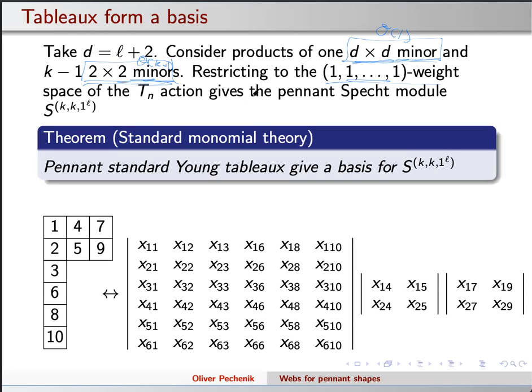And so this is some space of polynomials again. The definition is a little bit complicated, but it is completely explicit. And these polynomials are the Specht module. They're the Specht module for this pennant shape. And you know, you can write them down. And the action of the symmetric group is permuting the columns of your matrix. So permuting the subscripts on your variables and all that. So standard monomial theory is still telling you a basis for the space that has a basis given by standard Young tableaux of the appropriate shape of your pennant shape.